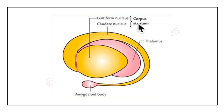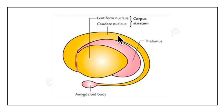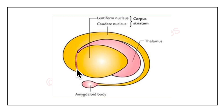First we look at the corpus striatum. It is divided by the internal capsule into two nuclei: the lentiform nucleus and the caudate nucleus. The caudate and the lentiform nucleus together form the corpus striatum. These two nuclei are interconnected by bands of grey matter below the anterior limb of the internal capsule, and these bands give it a striped appearance — that is how the name corpus striatum comes into effect.